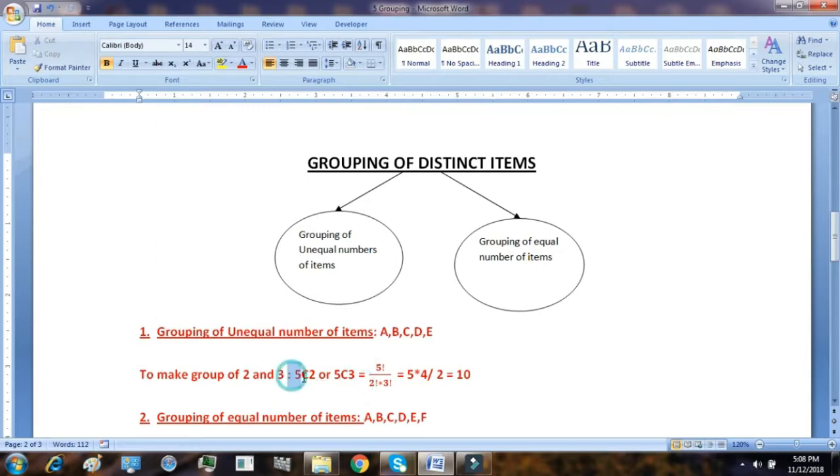This 5C2 means that I want to select 2 letters out of the 5. That will make a group of 2 and the next 3 remaining will automatically form the next group. So the formula will be either you apply 5C2 or 5C3, which is factorial 5 upon factorial 2 into factorial 3 equal to 5 into 4 upon 2 equal to 10. So 10 types of groups can be formed.